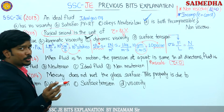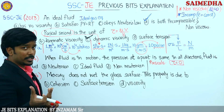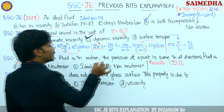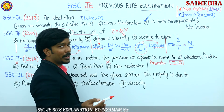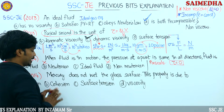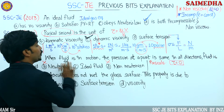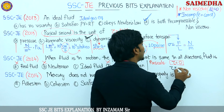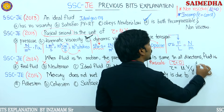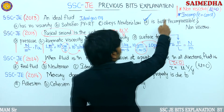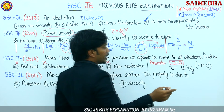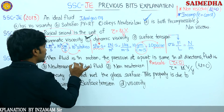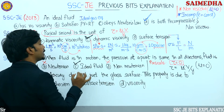Pascal's law is not valid for Newtonian fluid - Newtonian has its own definition: shear stress is directly proportional to velocity gradient. Non-Newtonian does not obey Newton's law. The only option left is ideal fluid. When fluid is in motion, pressure at a point is same in all directions - shear equals zero. For ideal fluid, viscosity mu equals zero, so tau equals zero. Ideal fluid is the correct answer.